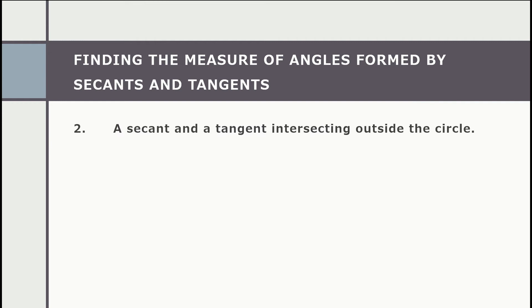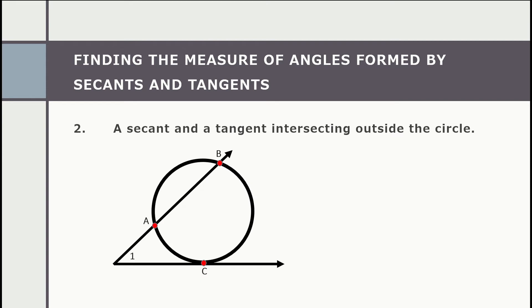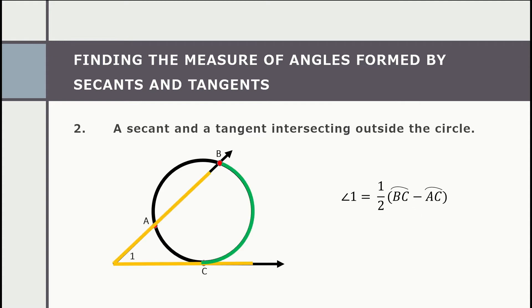Number two: a secant and a tangent intersecting outside the circle. In the given figure, angle one is formed outside the circle. Unlike the previous case where we simply took half the intercepted arc, here we see two intercepted arcs — arc BC and arc AC. When the angle is formed outside the circle, we subtract the two intercepted arcs before taking half. So our formula is one half multiplied by the difference of arc BC minus arc AC.